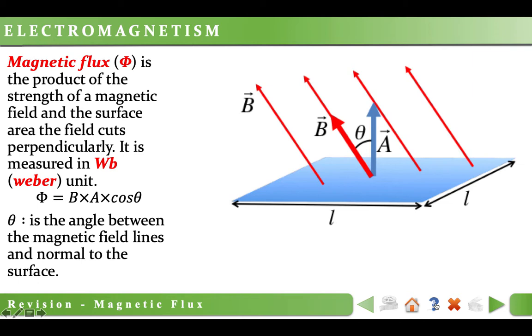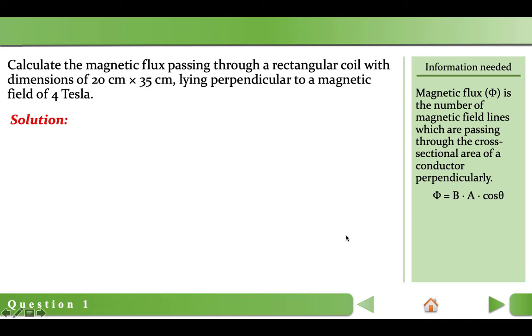Now let's solve a couple of questions. Question 1: Calculate the magnetic flux passing through a loop with dimensions of 20 cm by 35 cm, lying perpendicular to a magnetic field of 4 teslas.